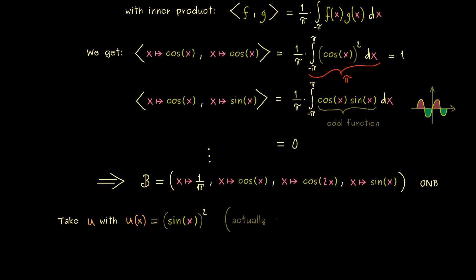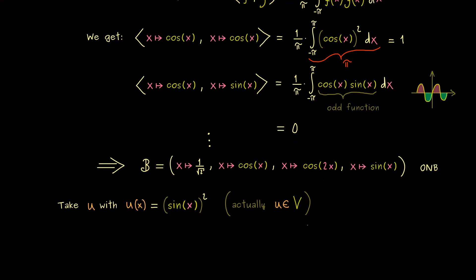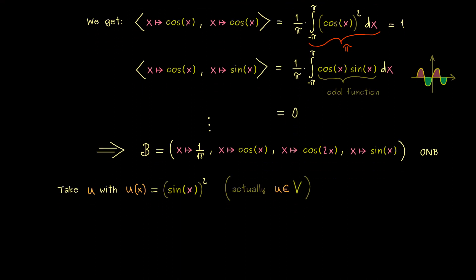So maybe it does not look like it, but it's actually spanned by the basis vectors, so it's an element in our vector space V. And with that knowledge we also know that we have an easy method to calculate the coefficients of the linear combination. In other words, now we calculate the so-called Fourier expansion of this function. This means we have to calculate exactly four inner products. Okay, then let's immediately start.